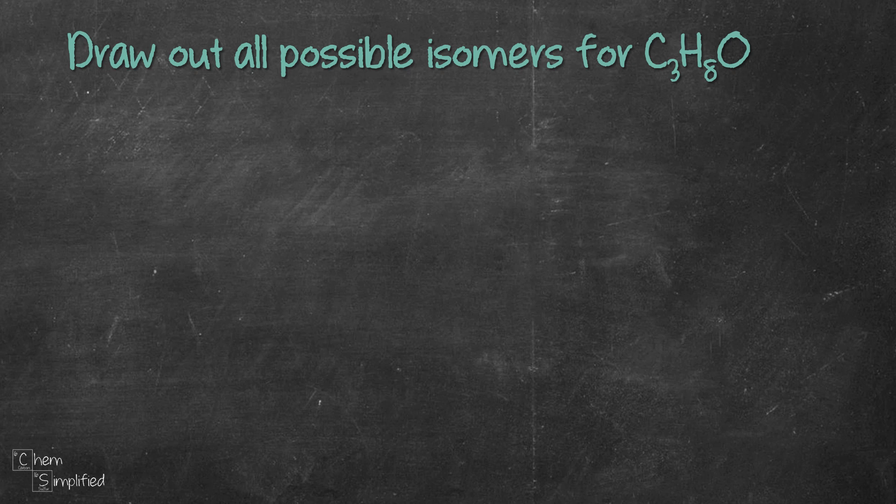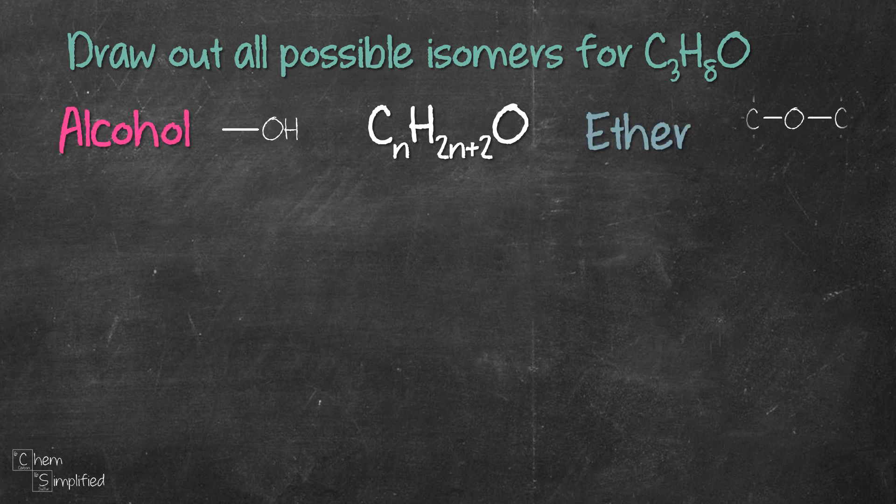The question is asking to draw out all constitutional isomers for C3H8O. Since this chemical formula fits in the general formula of CnH2n plus 2O, that means C3H8O can be an alcohol with OH functional group and it can also be an ether which has an oxygen sandwiched between two carbons.